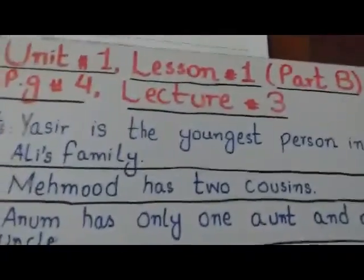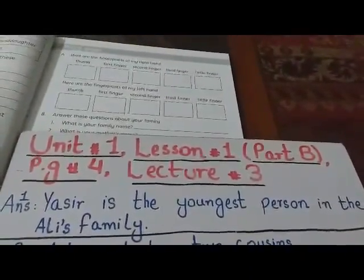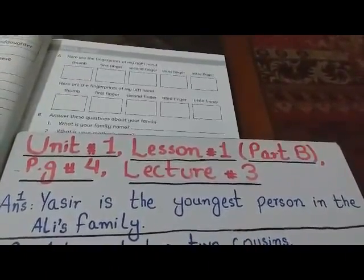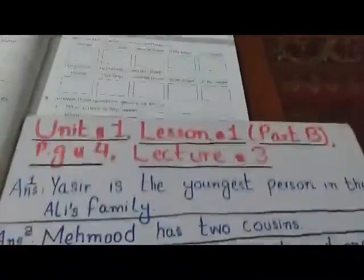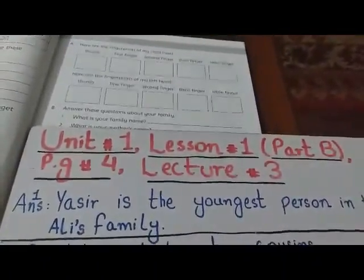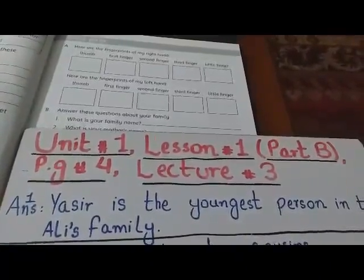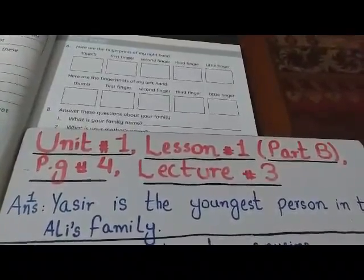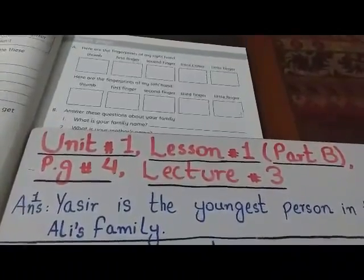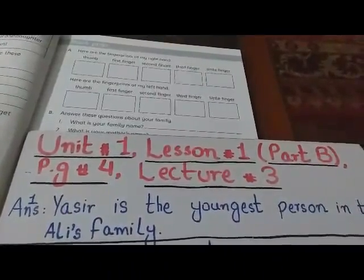The answer is: Yasir is the youngest person in the Ali family. یہاں پر Ali's family شو ہو رہا ہے - apostrophe s کا مطلب ہوتا ہے کا، کے، کی۔ جیسے notebook's work - notebook کے ساتھ apostrophe s ڈالتے ہیں تو اس کا مطلب ہے notebook کا کام۔